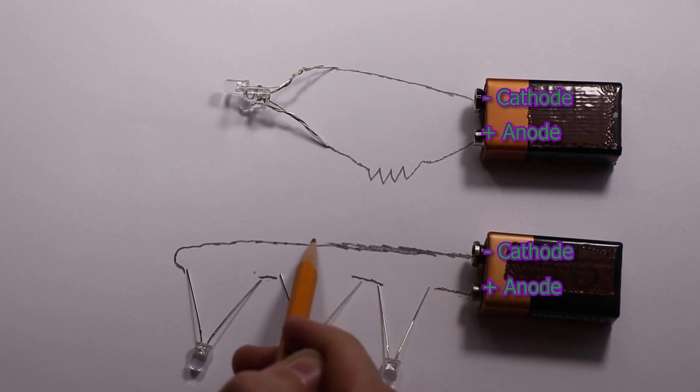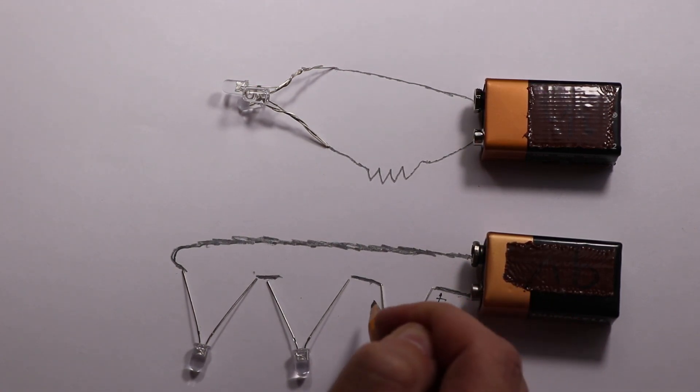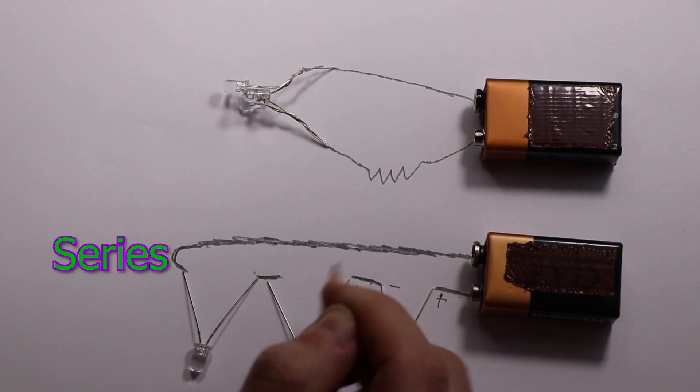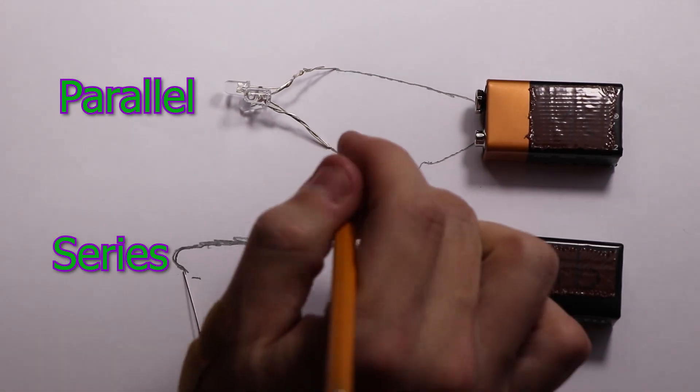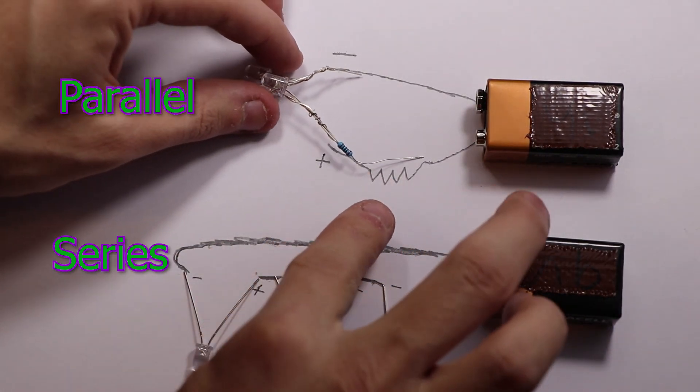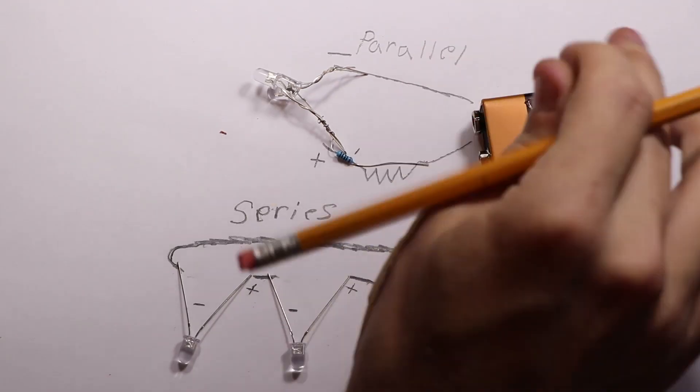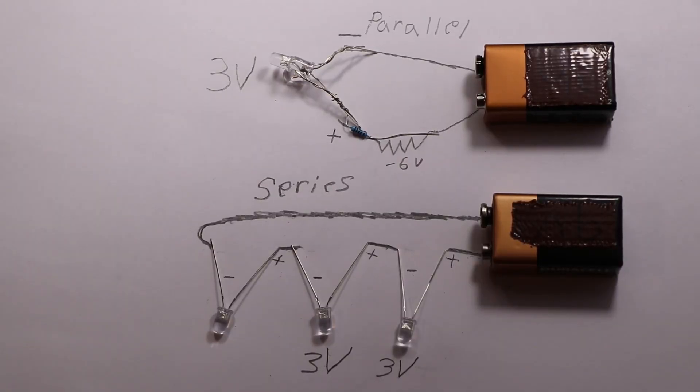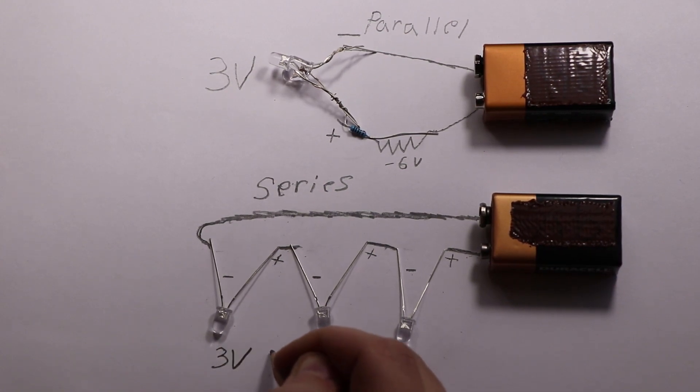This next type of circuit or wiring configuration is called a series. For the series, instead of wiring them all together at the same time, we're going to wire them into a chain—one leads to the next one which leads to the next. Positive to negative, positive to negative, positive to negative, instead of just one positive and one negative.